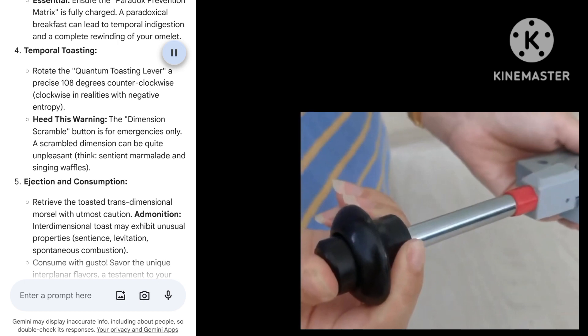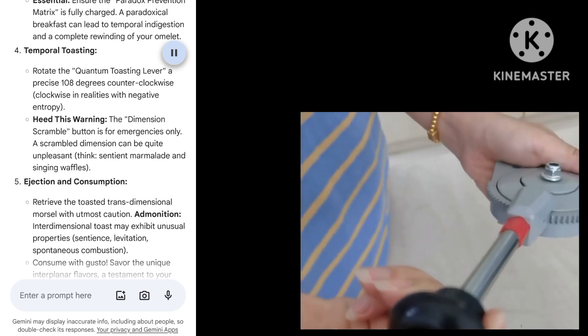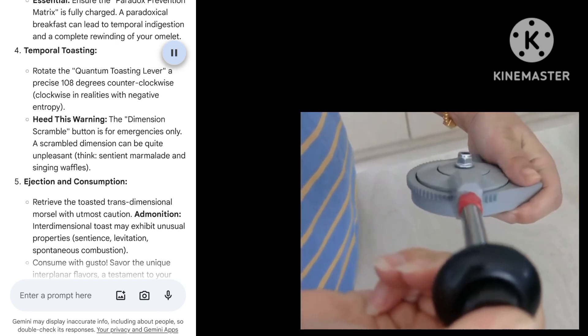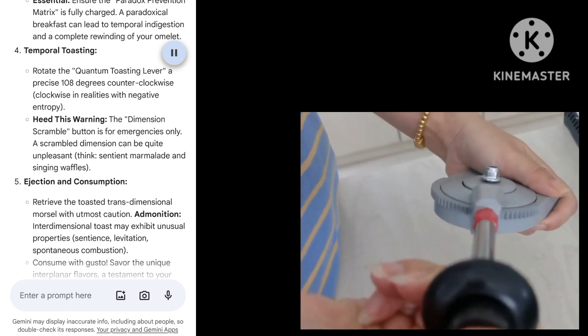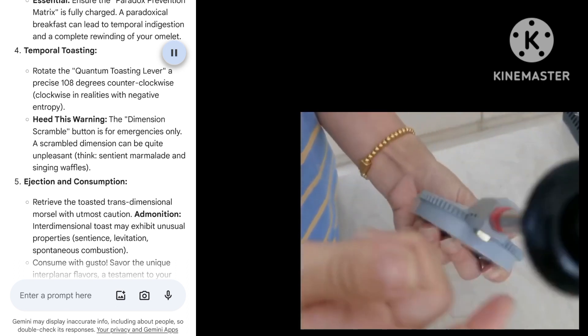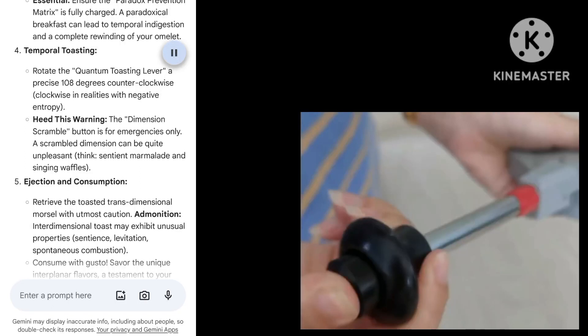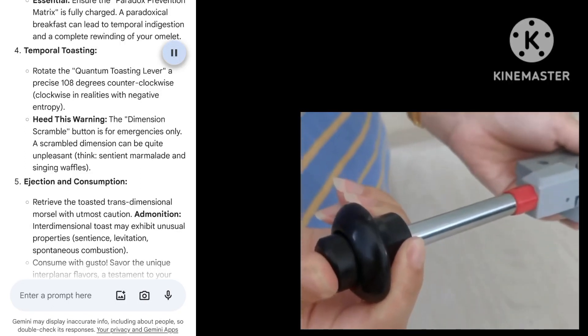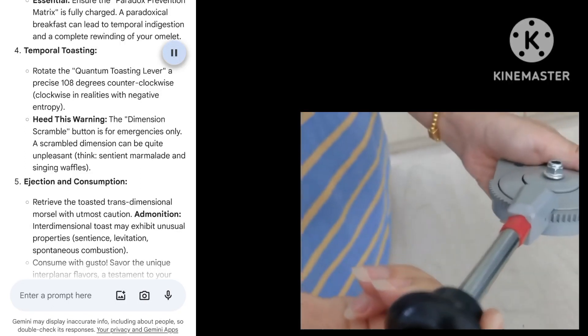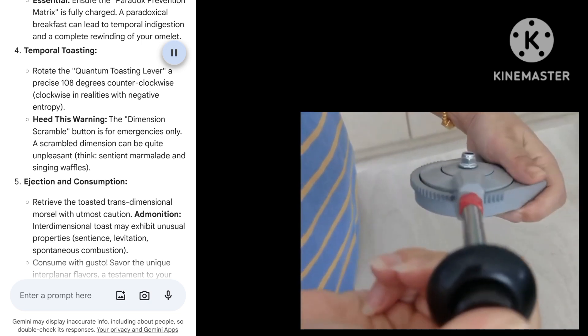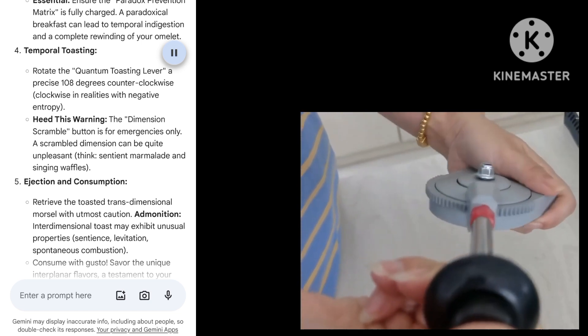4. Temporal Toasting: Rotate the Quantum Toasting Lever a precise 108 degrees counter-clockwise (clockwise in realities with negative entropy). Heed this warning: The Dimension Scramble button is for emergencies only. A scrambled dimension can be quite unpleasant—think sentient marmalade and singing waffles.